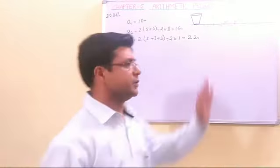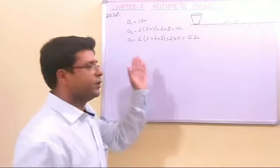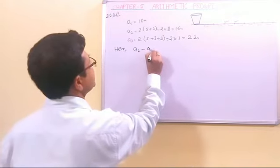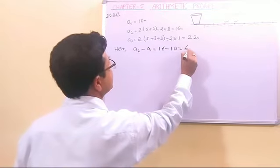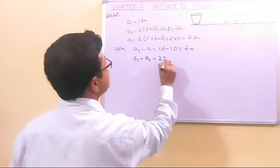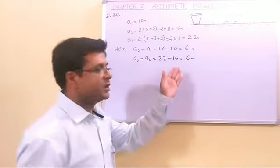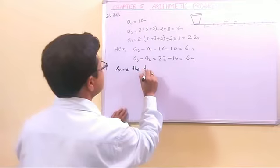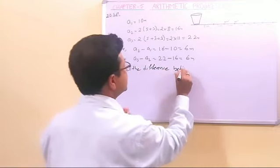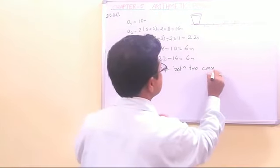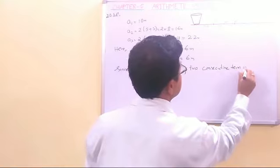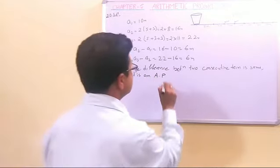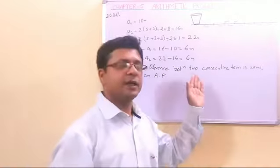Now, here you can check that there are 10 potatoes. So let us see whether this is an AP or not. Then we can apply the formula for AP. Here, A2 minus A1, 16 minus 10 is 6 meters. So the distance difference between two consecutive terms is same. So it is an AP, since the difference between two consecutive terms is same.